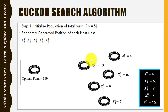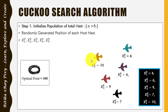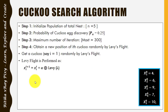We have only five host nests. You can see the initial population and the position of each host nest. Since we cannot make any difference between host nest, egg, and solution, each cuckoo position is treated the same way. We have five cuckoos, and you can see the position of each. The optimal point is 100.